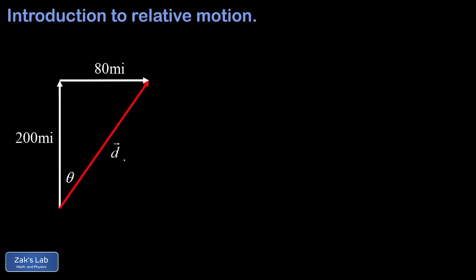We can get this displacement vector in polar form by using trigonometry. The magnitude of the displacement is given by the Pythagorean theorem — we take the square root of the sum of the squares of the legs — and when we run the numbers we get about 215 miles for this displacement over the course of one hour.